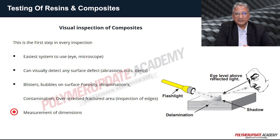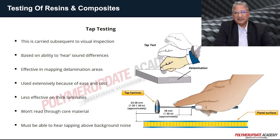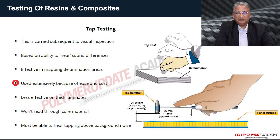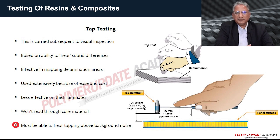After visual inspection, tap testing is carried out. It is based on the ability to hear sound differences and is effective in mapping delamination areas. It is used extensively because it is easy and cost effective. However, it is less effective on thick laminates and will not read through core material. It is important that you must be able to hear tapping above background noise.